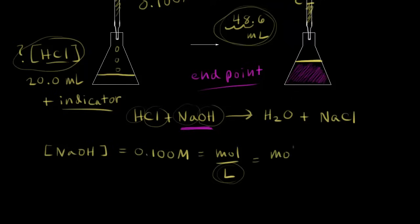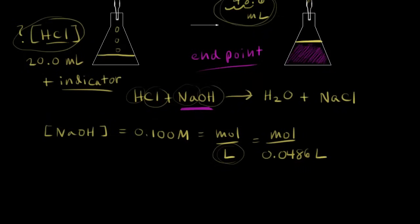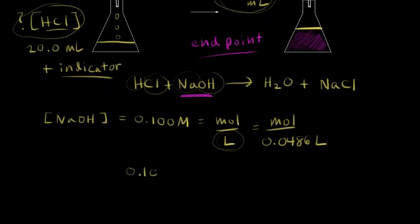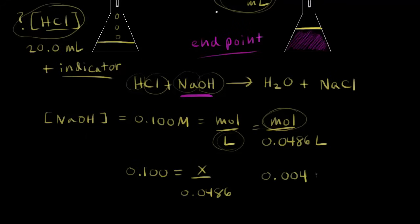So this gives us: 0.100 equals x over 0.0486. Solving for x, where x represents the moles of sodium hydroxide needed to neutralize the acid, we get 0.00486 moles of sodium hydroxide used in our titration.